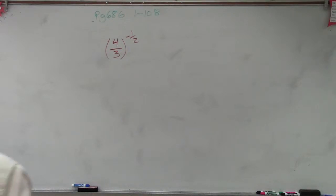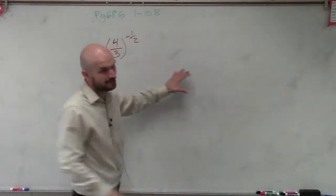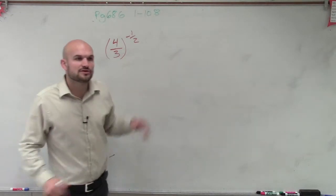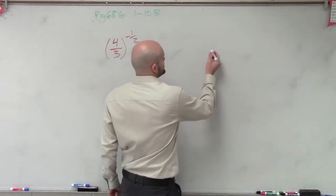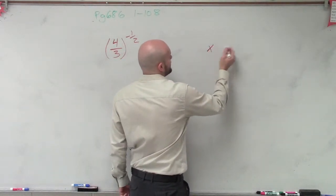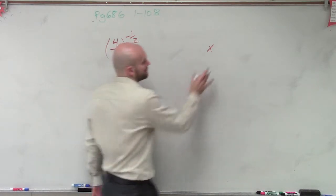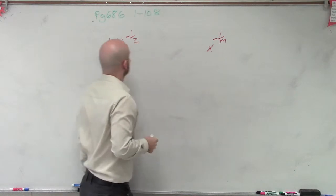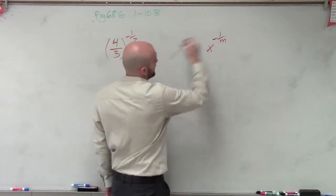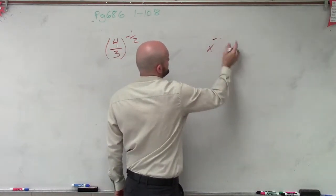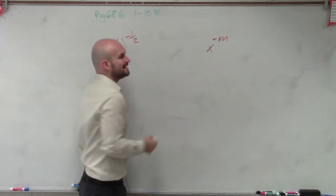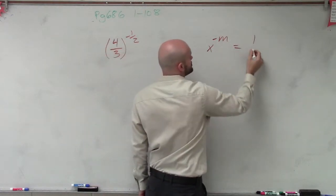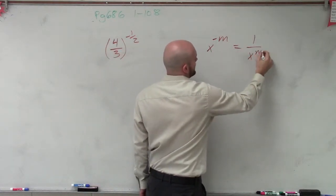All right. So ladies and gentlemen, there's a couple rules that we need to apply with this. The first rule, Dustin, that we need to make sure that we understand is, remember, if we have a base raised to a negative exponent—or any exponent, it doesn't matter if it's positive or negative, or if it's rational—but any negative exponent, x to the negative m, that equals 1 over x to the m.